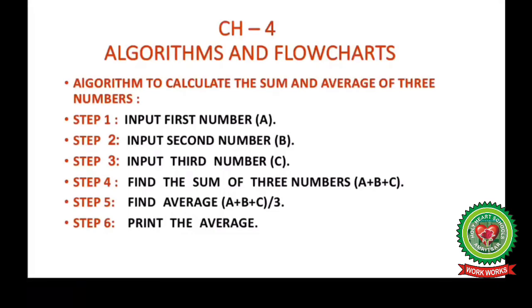To find the average, we know we have three numbers, so we have to divide these three numbers by 3. So step 5 will be: find the average, which is A plus B plus C divided by 3.